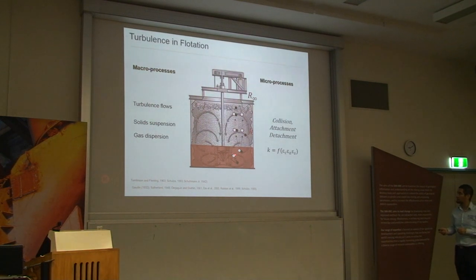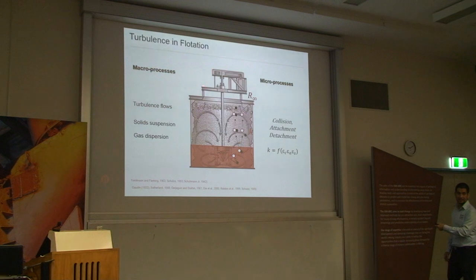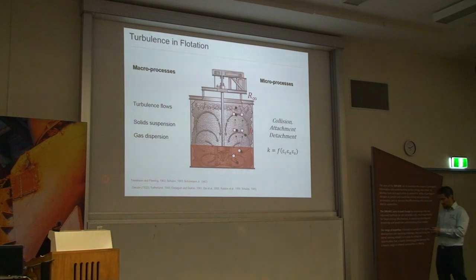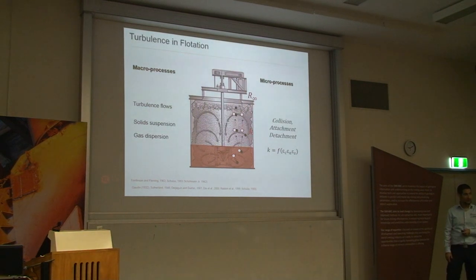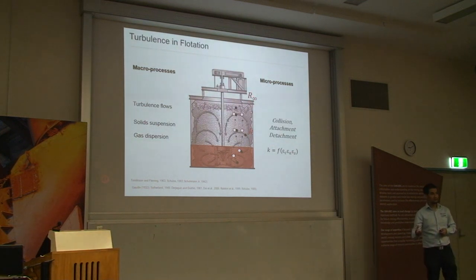Basically, a bubble approaches and particles attach to it. There are two outcomes: the bubble makes it to the surface, releasing attached particles to the froth — which is the recovered material. However, if turbulence conditions are very high, there is a risk that particles detach, and we lose performance. The key parameters normally modeled are K, the flotation rate, described as a function of the efficiency of collision, attachment, and stability — and the ultimate recovery of the mineral.